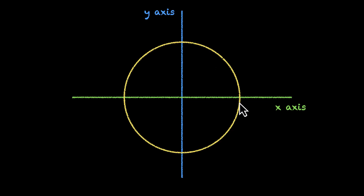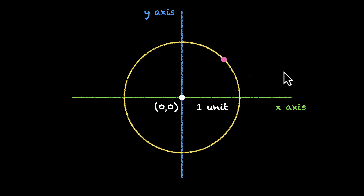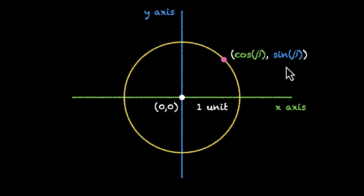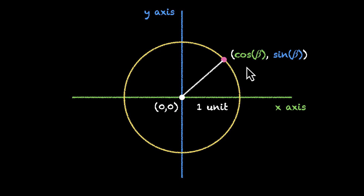Let's set things up. This is the x-axis, y-axis, and a unit circle. The center is the origin — 0, 0 — and the radius is 1 unit. Now let's look at a point on this circle. This point will have some coordinates: its x-coordinate and y-coordinate. The way we have defined trigonometric ratios is: the x-coordinate is the cos of an angle, and the y-coordinate is the sine of an angle. The angle is the one that this line makes with the x-axis. To find the ratio, find the point.